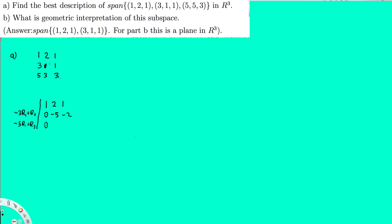Negative 5 times 2 is negative 10. Note that the third row has a 5 here, so negative 10 plus 5 is minus 5. Then minus 5 times 1 is minus 5, and minus 5 plus 3 is minus 2. So the second and third rows now have the same numbers.